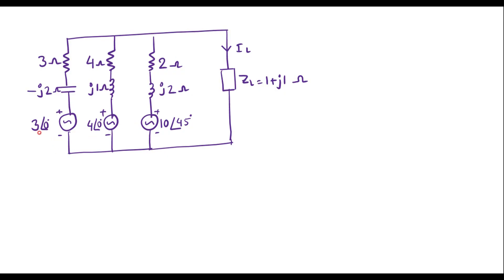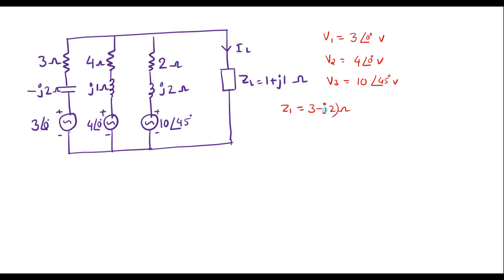In this circuit, let me assume this is voltage V1, this has voltage V2, and this has voltage V3. That is, let V1 equal 3 angle 0 volts, V2 is 4 angle 0, and V3 is 10 angle 45 degrees volts. Similarly, let Z1 equal 3 minus J2 ohms, Z2 equal 4 plus J1 ohms, and Z3 equal 2 plus J2 ohms.